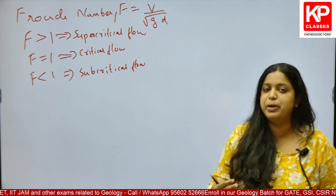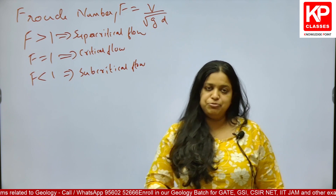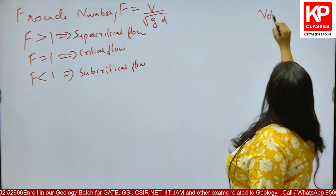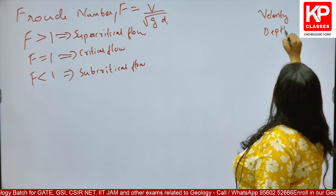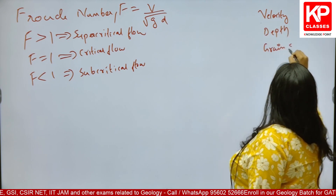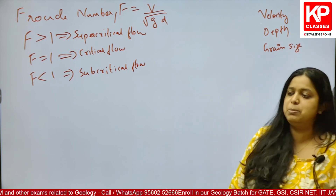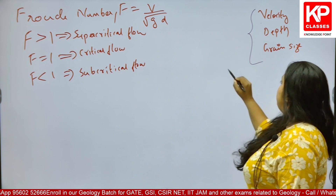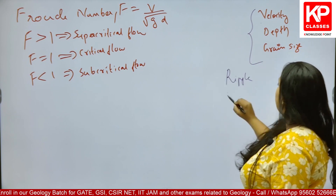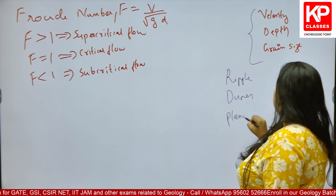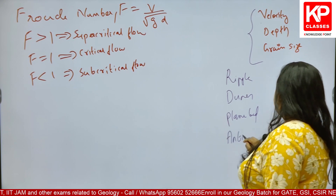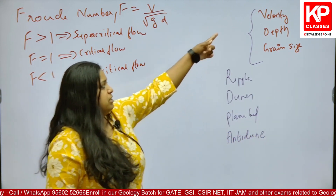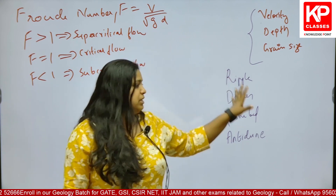When it comes to bed forms, different bed form ripples, different types of dunes or anti-dunes — all these bed forms develop on the basis of three factors. It completely depends upon velocity, depth of the channel, and the grain size of sediments present in the channel. Whether it is ripple mark, dunes, simple plain bed, or anti-dune, all different types of bed forms develop on the basis of these three factors. How can we relate Froude number with these bed forms?